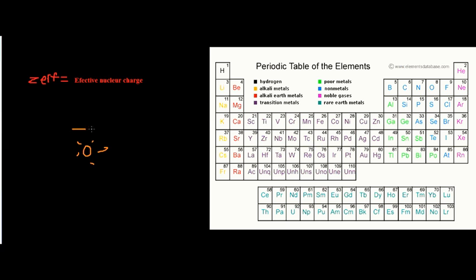The core electrons basically act like a lamp shade of an atom. You can imagine the light bulb as the atomic nucleus and the lamp shade as the core electrons surrounding it. All the valence electrons — since the core electrons are going to repel them — just like looking into a lamp shade, you're not going to see the light as bright as if you took the core electrons away.